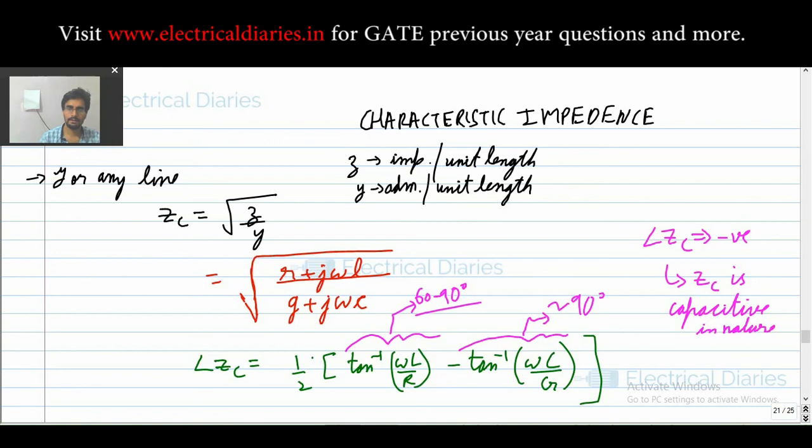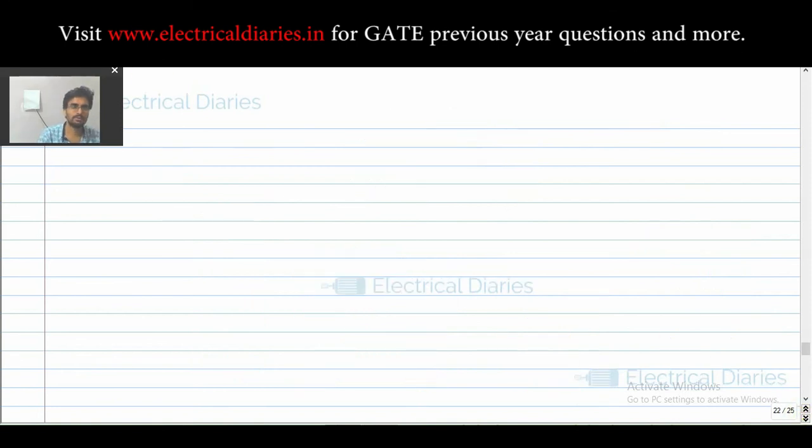Now we will look into the importance of this characteristic impedance. For analysis purposes, to avoid these lengthy calculations of complex numbers, we assume the line is lossless.